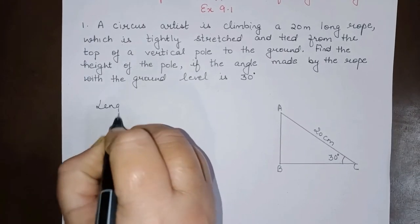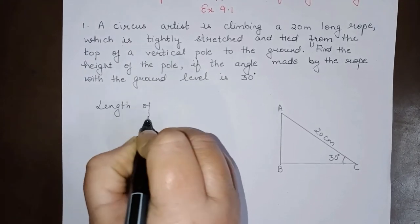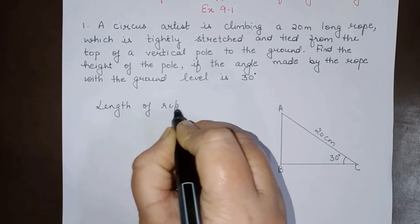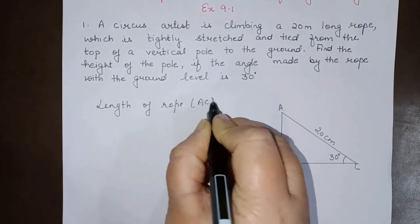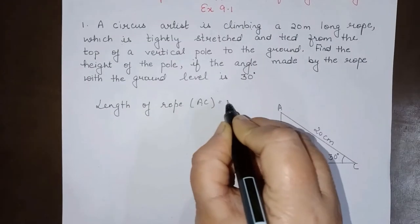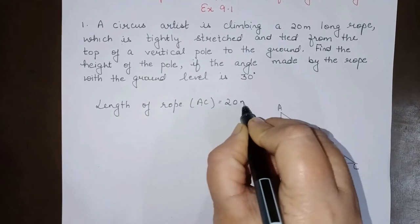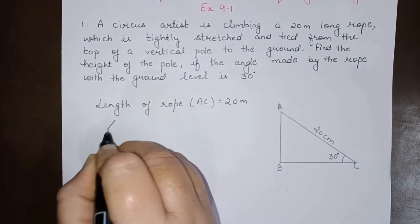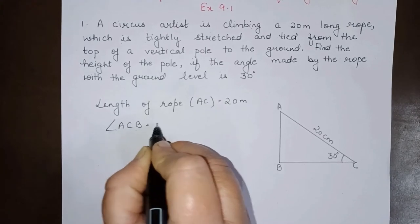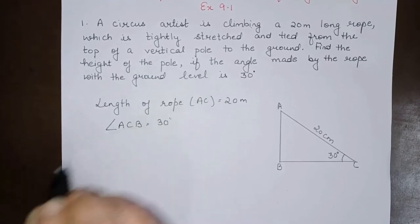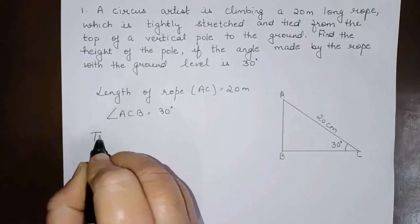So let us first write what is given to us. Length of rope, that is AC, if you will see this triangle, AC is given to be 20 meters. Also, angle ACB is given to be 30 degrees. We have to find AB, which is the height of the pole.